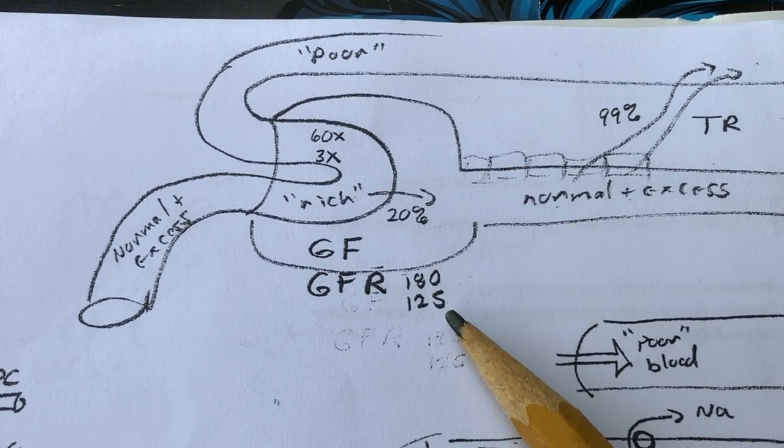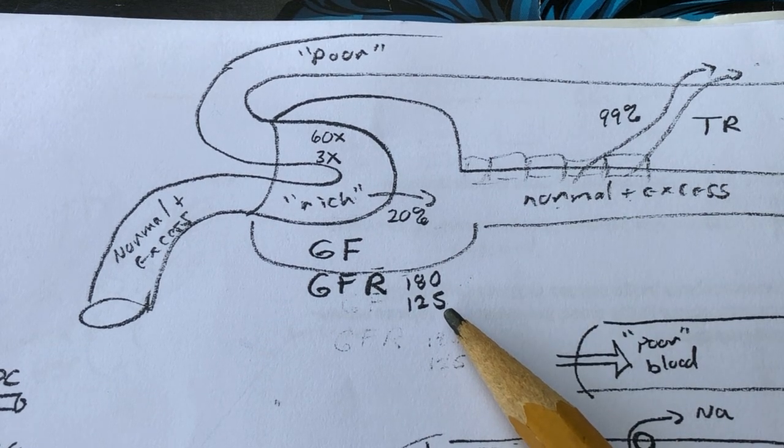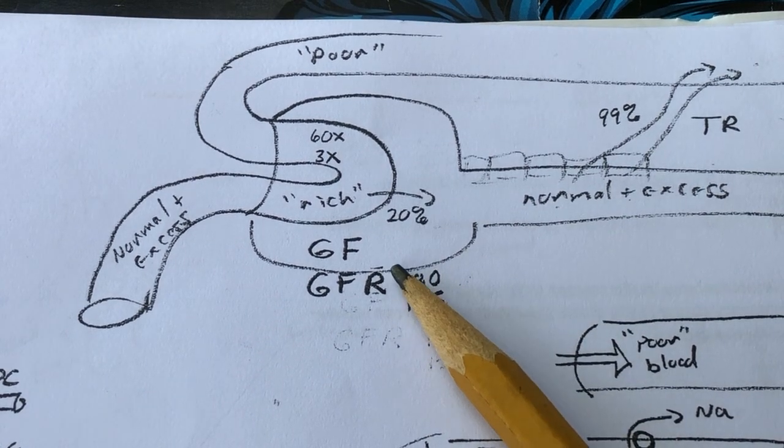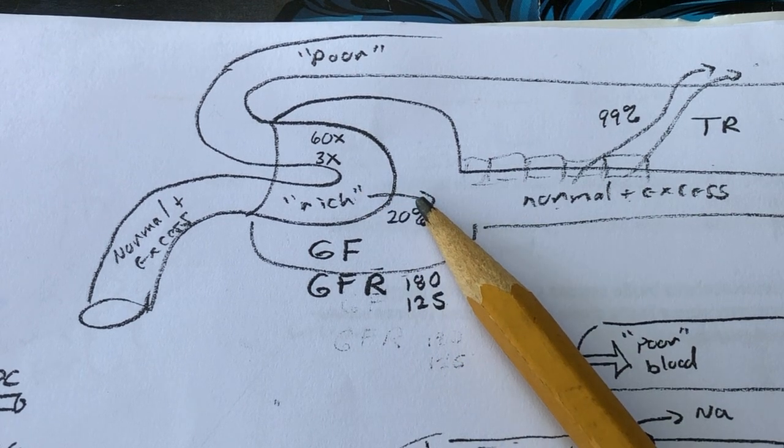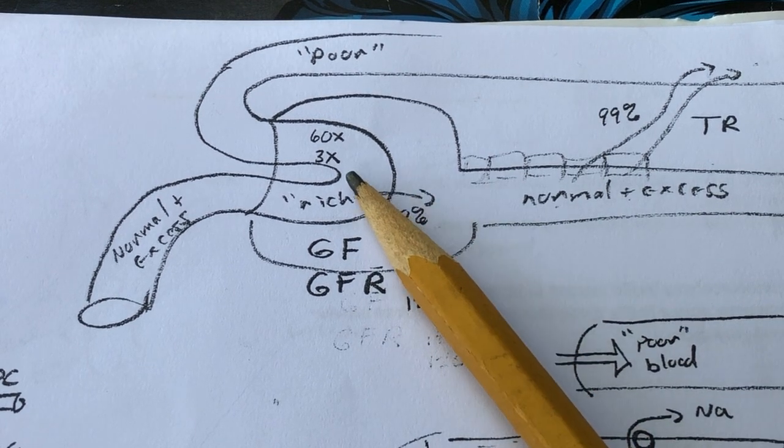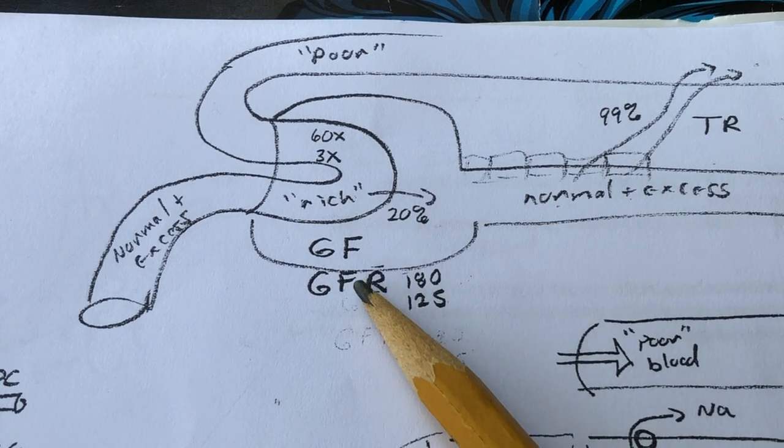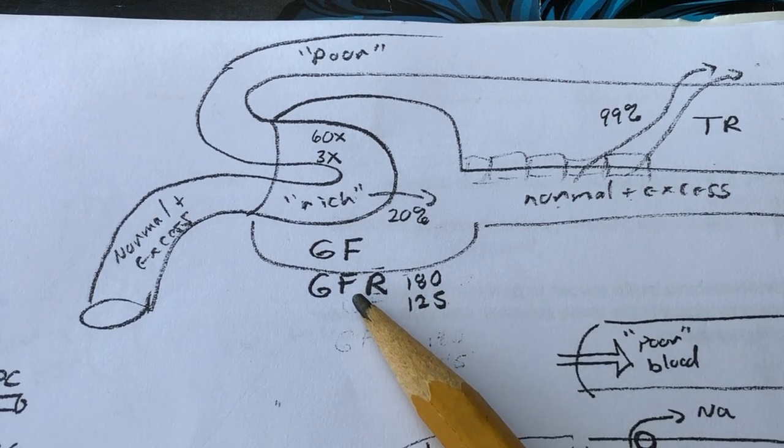Glomerular filtration is the process of pushing that material out of the blood using this higher blood pressure, and the speed at which it happens is called the glomerular filtration rate.